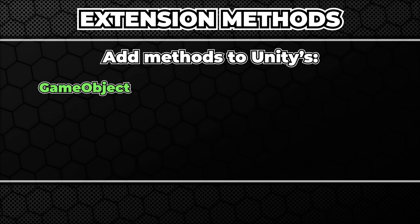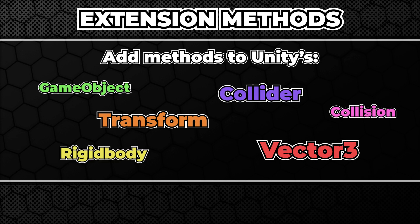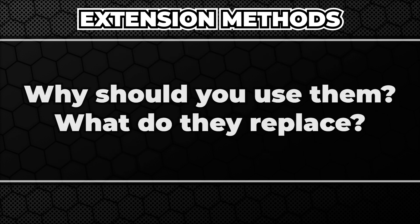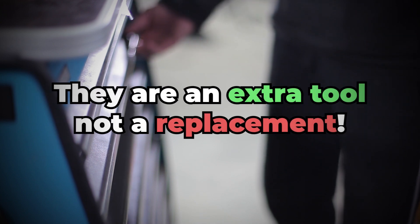In terms of Unity, it generally means the classes provided by the Unity engine, for example Rigidbody or Vector. Of course you may be wondering why should you use extension methods over, for example, creating a utility class. It's a very tricky question.